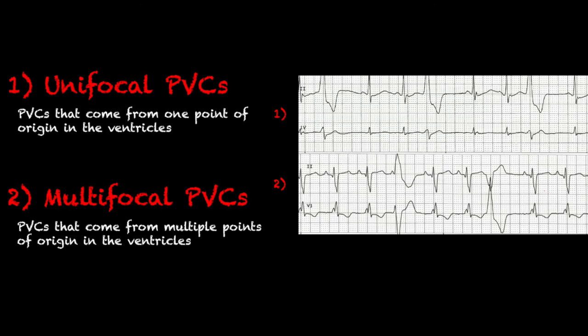On the screen here I have two different strips. Strip number one shows unifocal PVCs — PVCs that come from one point of origin in the ventricles, so all the PVCs look very similar. And in number two, you have multifocal PVCs — PVCs that come from multiple points of origin in the ventricles. You can see in the number two strip that they look very different; they're both PVCs, just coming from different areas of the heart.